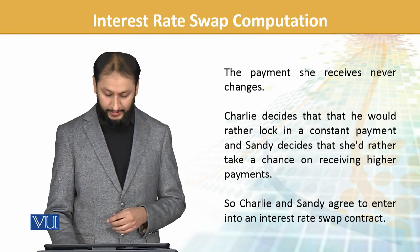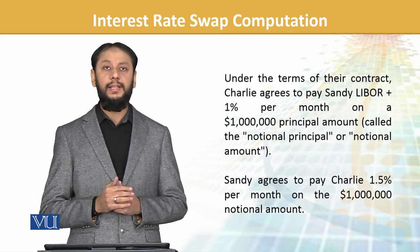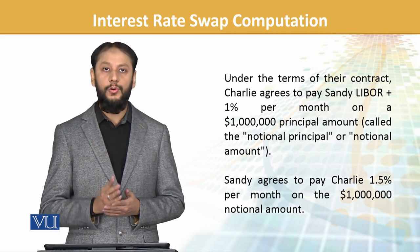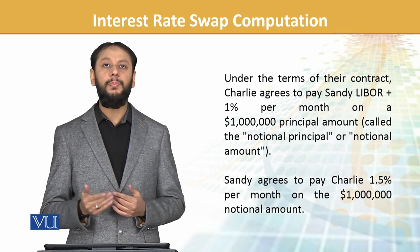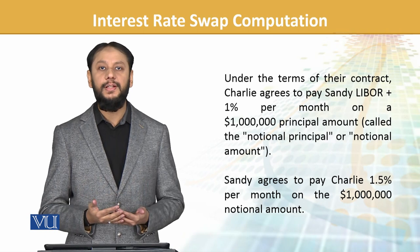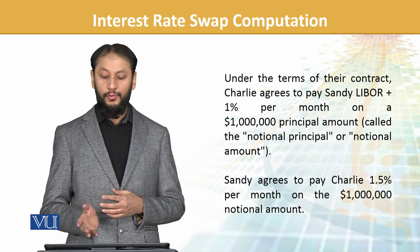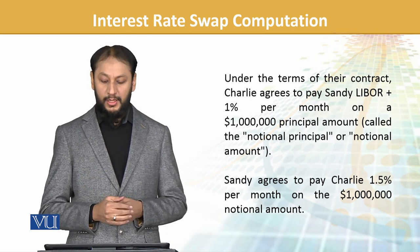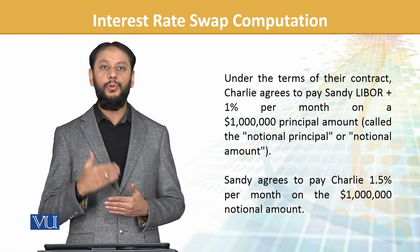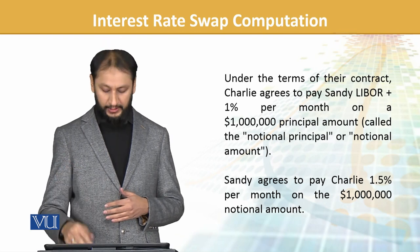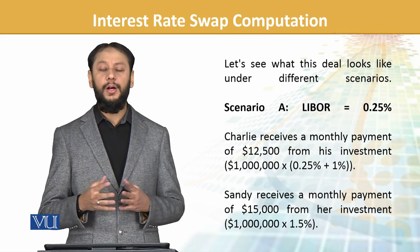Under the terms of the contract, Charlie agrees to pay LIBOR plus one percent to Sandy on the notional principal amount. The notional principal must be the same for both parties, otherwise the transaction cannot execute. Sandy agrees to pay Charlie 1.5% on the same notional amount. They will be passing payments on to the second party.